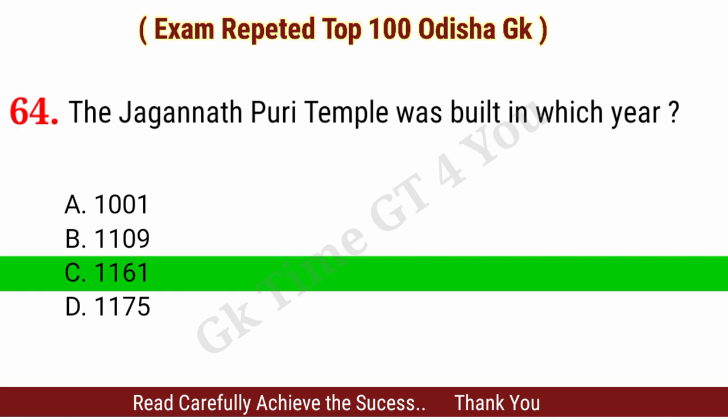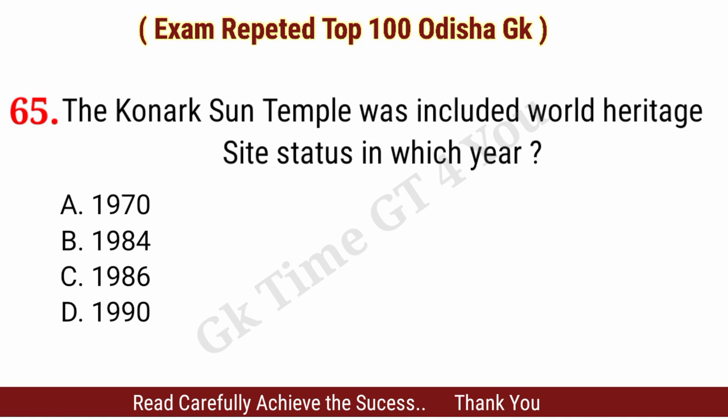Question number sixty-five: The Konark Sun Temple was included in the World Heritage Site list in which year? Right answer, option B: 1984.